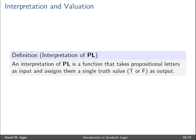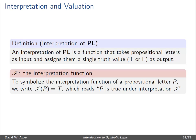The interpretation function takes propositional letters as input and assigns them a single truth value — true or false, abbreviated as T or F — as output. To symbolize this, we write i(p) = T, meaning the interpretation of the input p has an output of T, which is true. Another way to read this is: p, the propositional letter p, is true under the interpretation i.